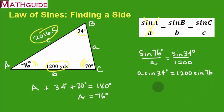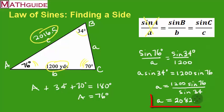Now what I'm going to do is solve for A. How do I solve for A? I'm going to take this 1,200 sine of 76, and I'm going to divide it by the sine of 34. I'm going to punch all this into a calculator, and it's going to give me an approximate answer.